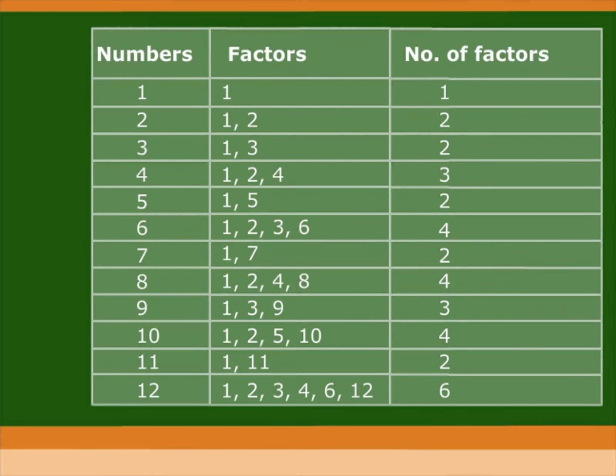The number of factors of seven is two. The number of factors of eight is four. The number of factors of nine is three. The number of factors of ten is four. The number of factors of eleven is two. And the number of factors of twelve is six.